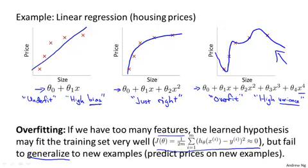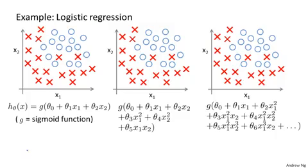On this slide we looked at overfitting for the case of linear regression. A similar thing can apply to logistic regression as well. Here's a logistic regression example with two features, x1 and x2. One thing we could do is fit logistic regression with just a simple hypothesis like this, where as usual g is my sigmoid function. If you do that, you end up with the hypothesis trying to use maybe just a straight line to separate the positive and the negative examples. This doesn't look like a very good fit to the hypothesis. So once again, this is an example of underfitting or of a hypothesis having high bias.